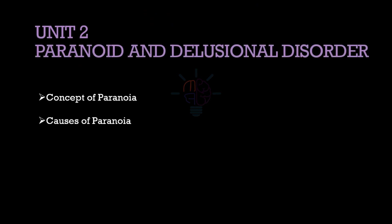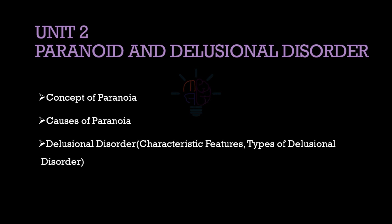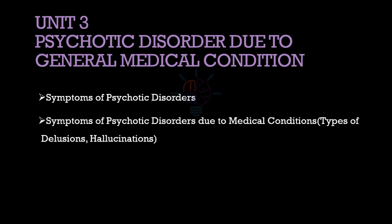From unit 2: concept of paranoia, causes of paranoia, delusional disorder — under that, characteristic features and types of delusional disorders. From unit 3: symptoms of psychotic disorders, symptoms of psychotic disorders due to medical conditions, and below that, types of delusions and hallucinations. Unit 4 you can omit.